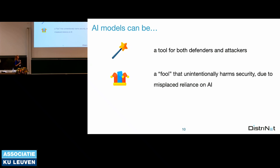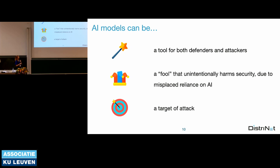AI models can also be a fool — when we as designers and users have placed too much reliance on what it should be able to do and utilized it in a way that harmed our system. We call this misplaced reliance or over-reliance. And AI models can be a target. When you introduce a machine learning model into your system, there are new vectors to undermine your system — a reality we are dealing with.